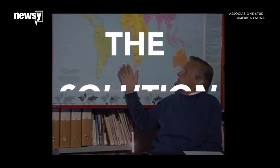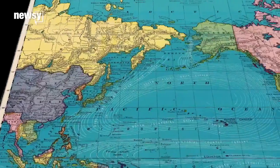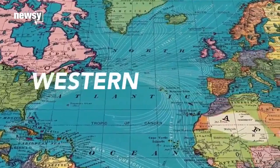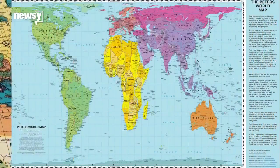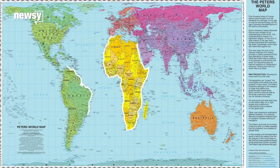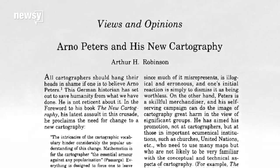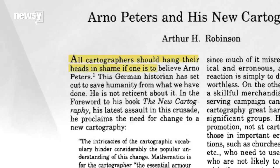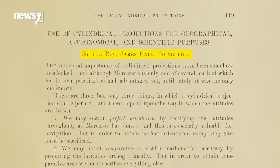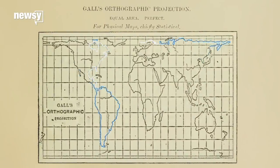Eventually, a German historian created what he said was a revolutionary map projection that he marketed as the solution to the Mercator. For Arno Peters, the Mercator represented Western imperialism. His new projection, with a more prominent Africa and South America, was meant to emphasize what he called the Third World. Reactions ranged from cautious amusement to outright hostility. Peters had trashed the cartographic community in writings promoting his map, and his version really wasn't even that original — a Scottish clergyman named James Gall had created virtually the same thing in 1885.